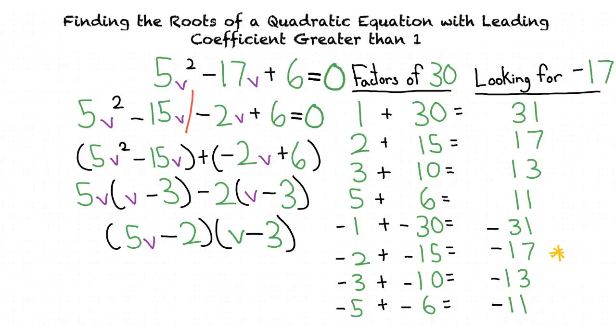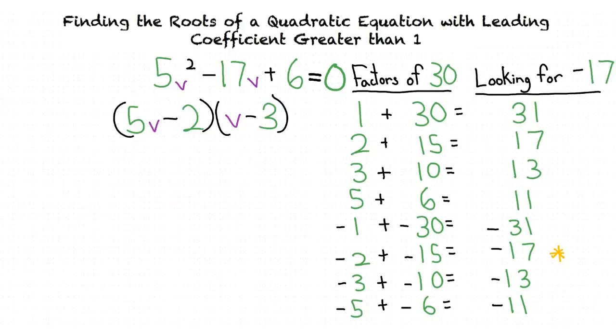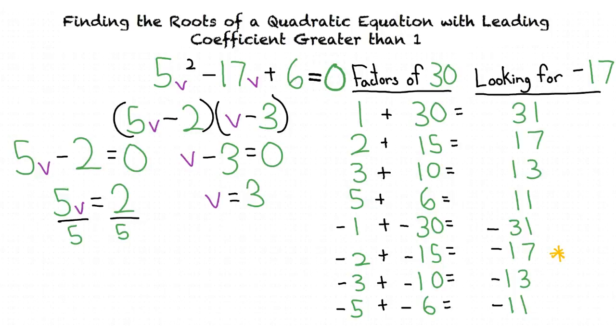Just as a reminder, a quadratic equation will always have two roots, even if those roots are the same number. Now we solve for what values of v can result in a solution of 0. That's correct. We first set both our factors equal to 0. We then solve for v to get our final answer of v = 2/5, 3.